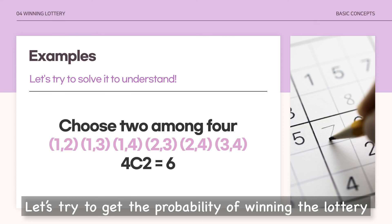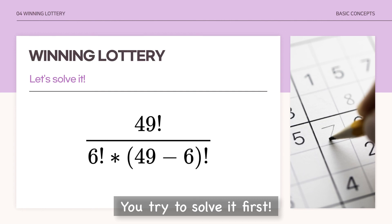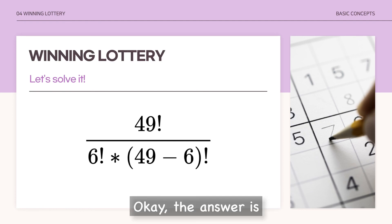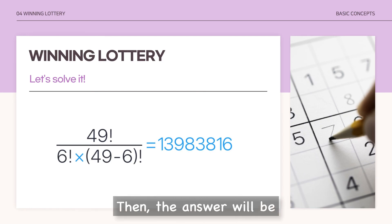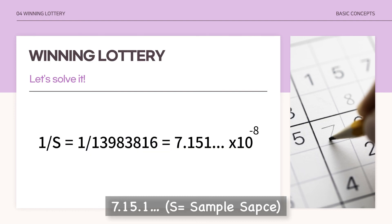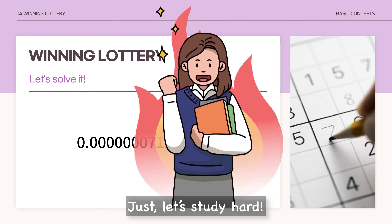Now let's try to get the probability of winning the lottery using the formula: 49 factorial over 6 factorial times (49 minus 6) factorial. The answer is 13,983,816. After that, we divide 1 by that number, and the answer is approximately 0.0000007151238. What comes to your mind? Just let's study hard.